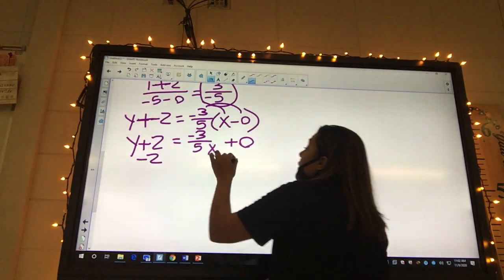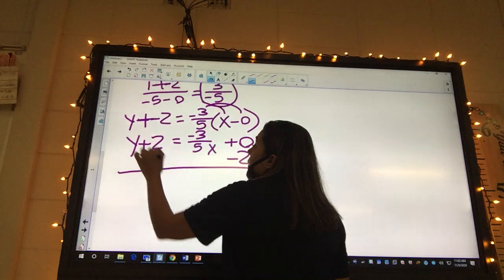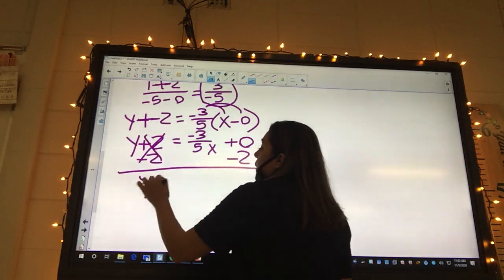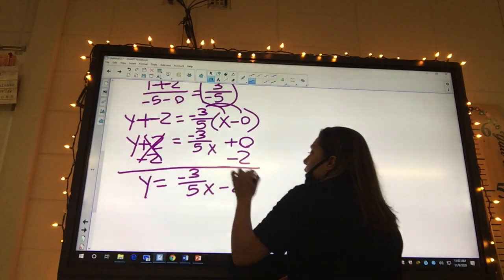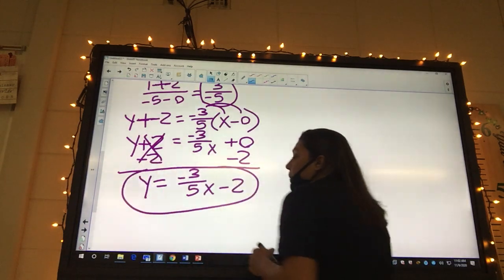So we're gonna say minus 2 on both sides. Y equals negative 3 over 5x minus 2.